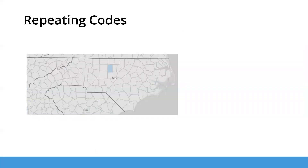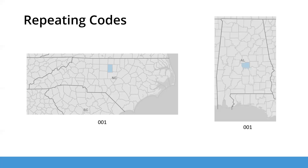The tricky thing about FIPS codes is that codes at lower levels of geography can repeat across larger levels of geography. For example, here you can see Alamance County highlighted in North Carolina — it has the county code 001. But Autauga County in Alabama also has county code 001. So the state and county codes are used together to make a unique identifier for each county. It's good to get in the habit of using complete FIPS codes all the way to the state level.